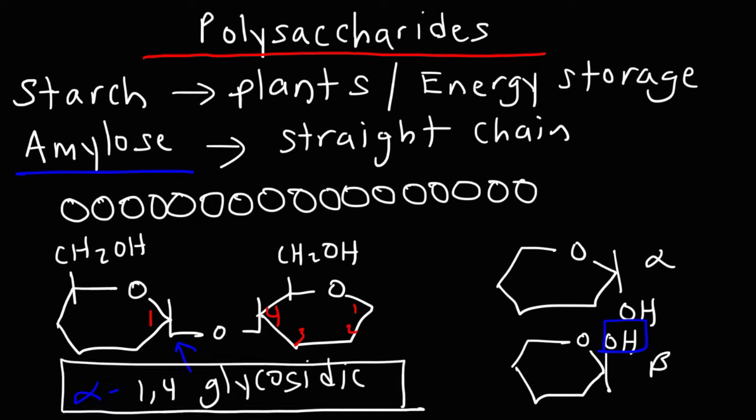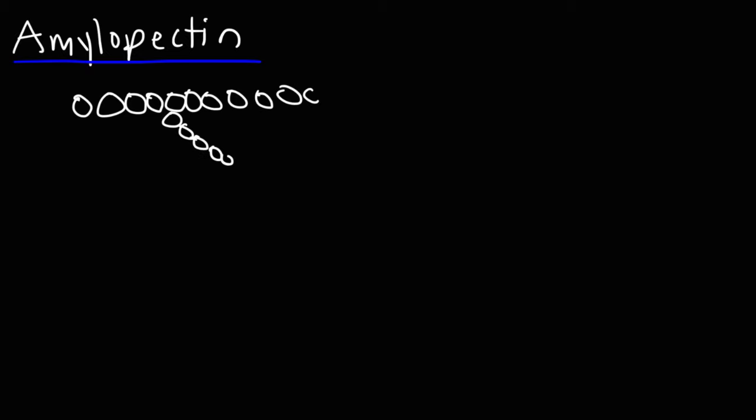Amylopectin is different. Amylopectin contains branch structures. So it still has a straight chain, but occasionally you'll have chains that will branch off from the main chain. So that will be an example of amylopectin.